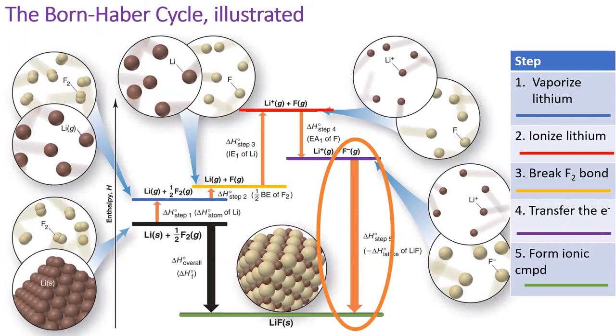The black line represents the overall reaction enthalpy, or according to Hess's law, the reaction enthalpy is the sum of the reaction enthalpies of each of these five steps, and we see that it is an exothermic reaction.